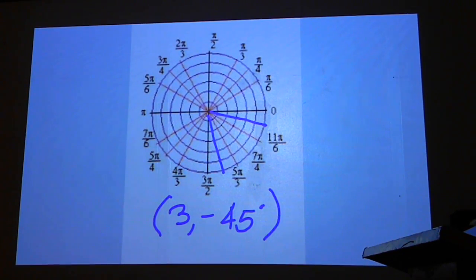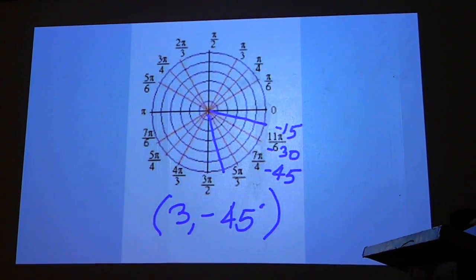But if you start at zero and go back 45 degrees, you're at negative 15 degrees here, then negative 30, and then negative 45. What's the radian measure that pertains to negative 45?